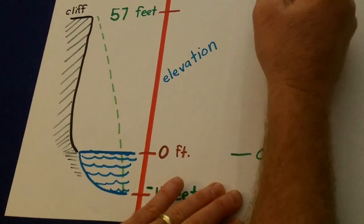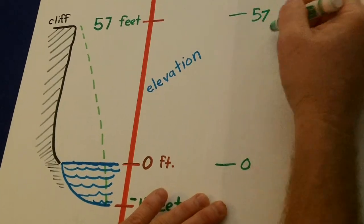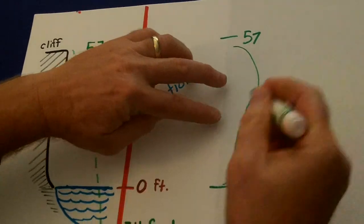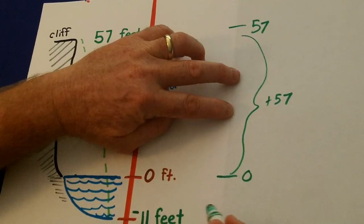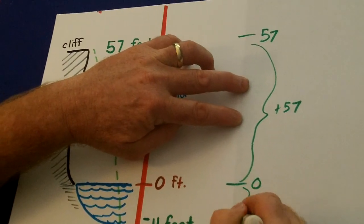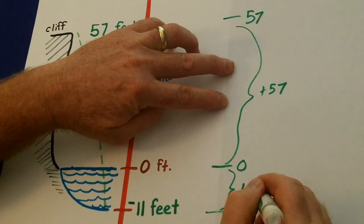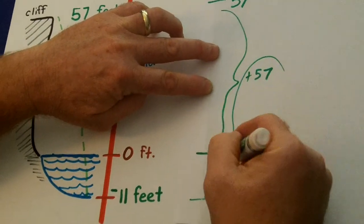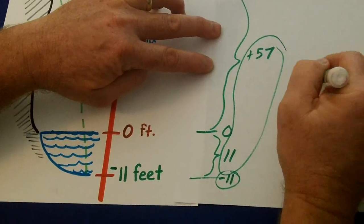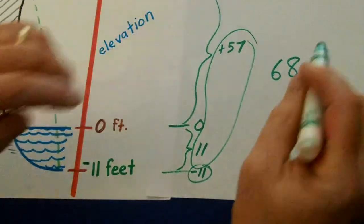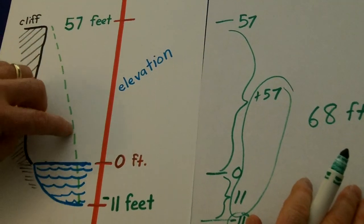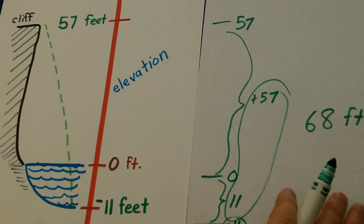So above zero, the cliff was 57 feet high. So plus 57. And then the ball went down 11 feet. So an absolute value of 11 feet to get down to negative 11. So you add those two together and you get 68 feet. The ball traveled from the cliff down to the bottom of the ocean.